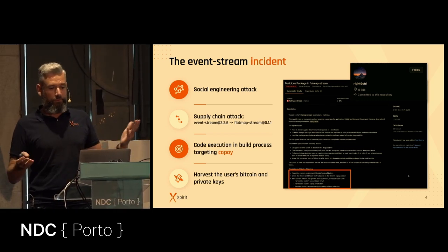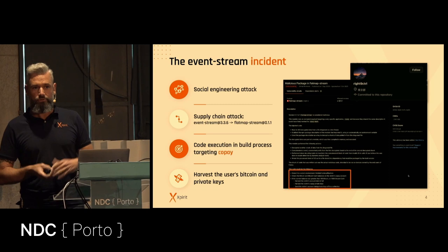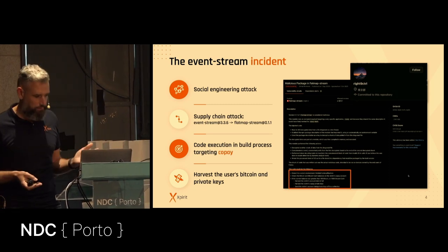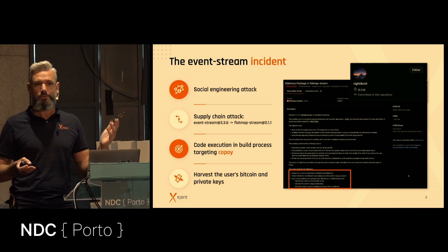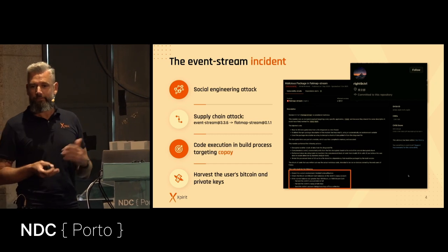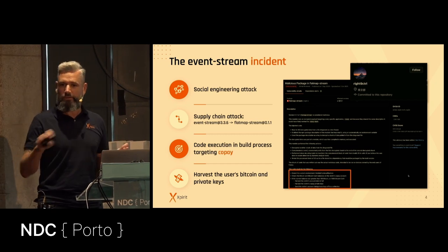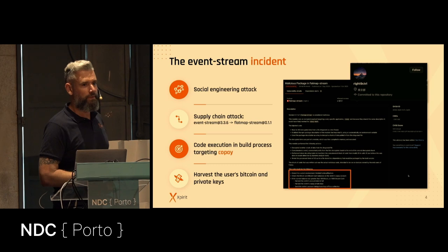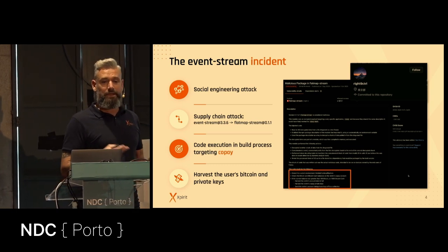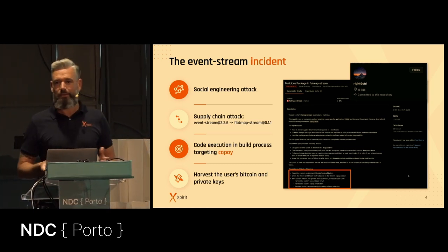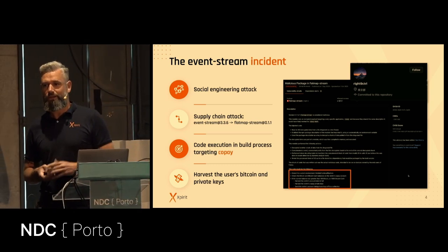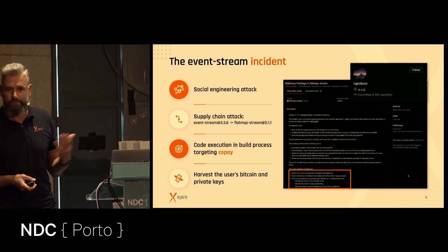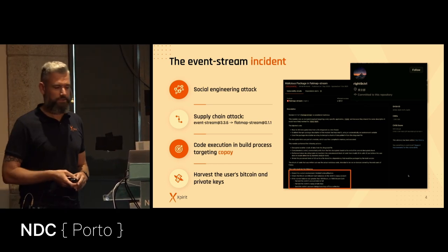Then he introduced a malicious version of flat-map-stream, which got published out to all the versions that had version 3.something installed. The vulnerable code would just check if you're a Copay user — it was a direct attack on Copay, using flat-map-stream to get to event-stream, and using social engineering to get into the repository. If you had more than 100 bitcoins, it would harvest the bitcoins and upload your credentials to a control server. You can imagine 100 bitcoins is quite a lot of money — you can really spend some time social engineering for that kind of attack.